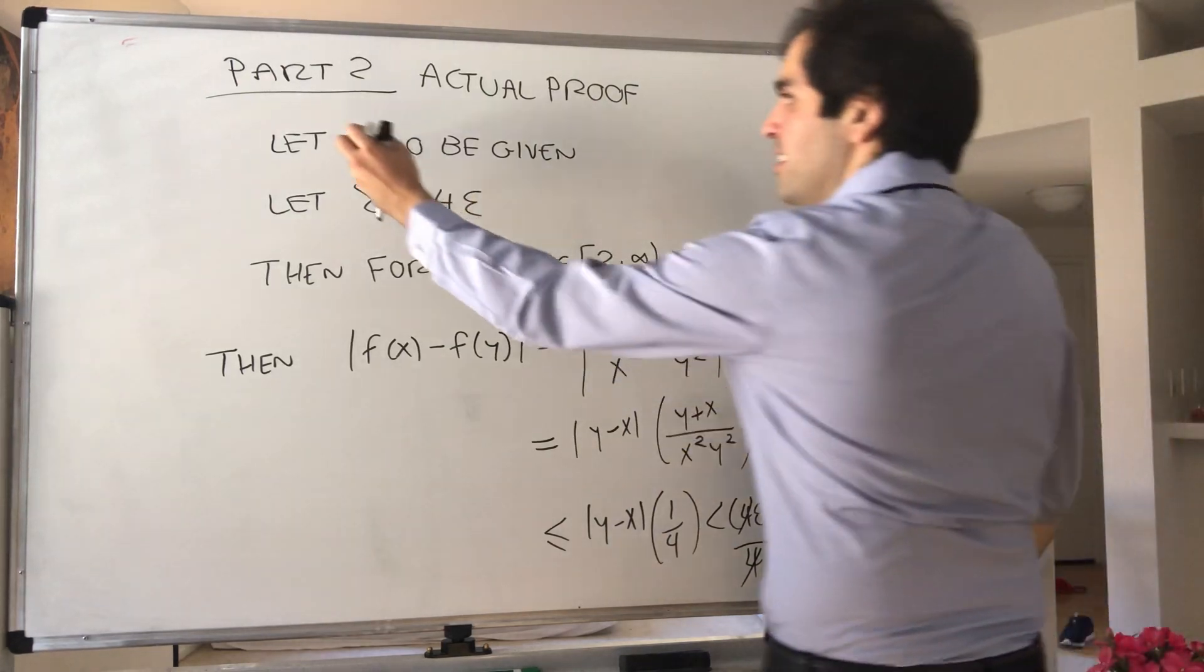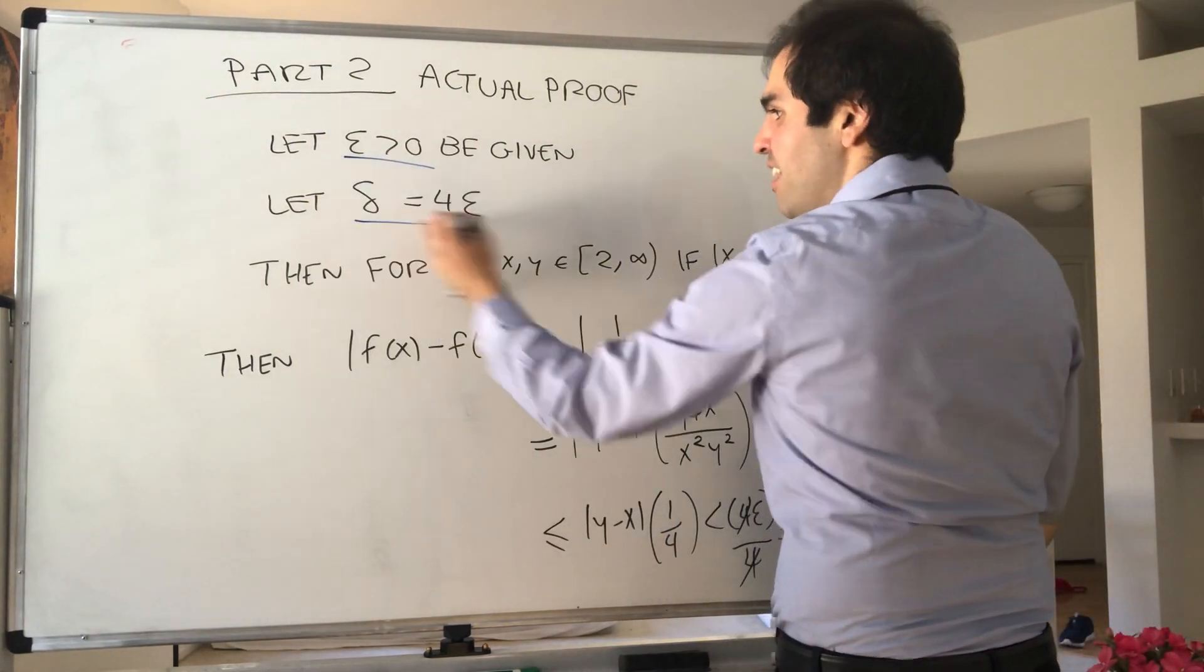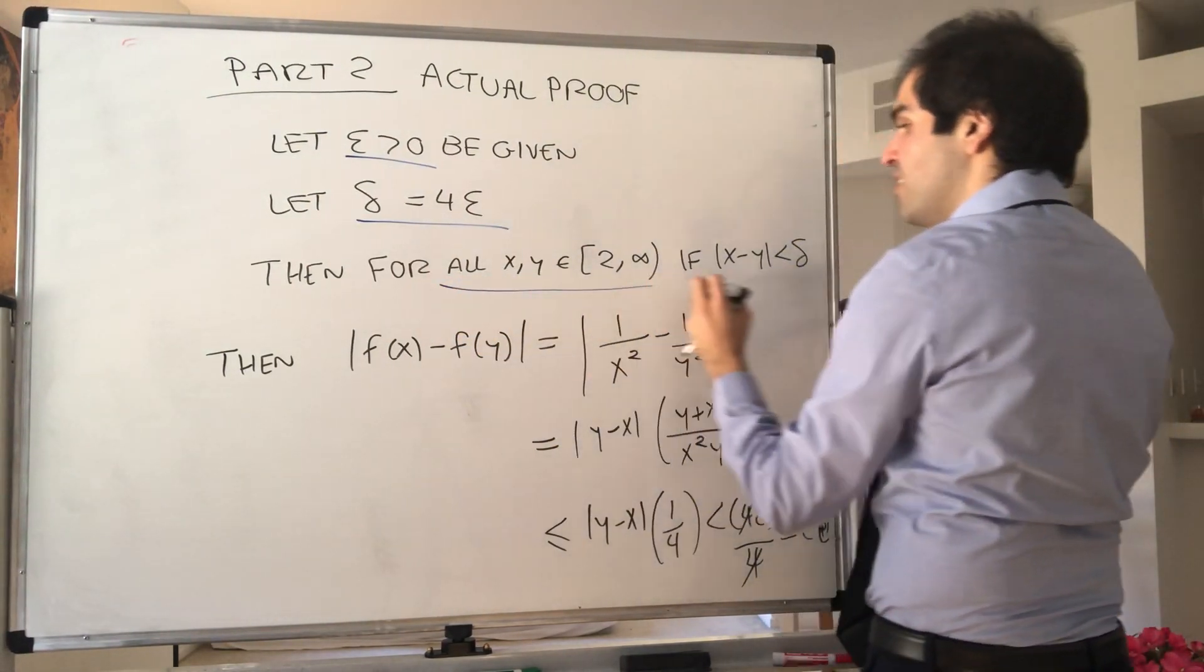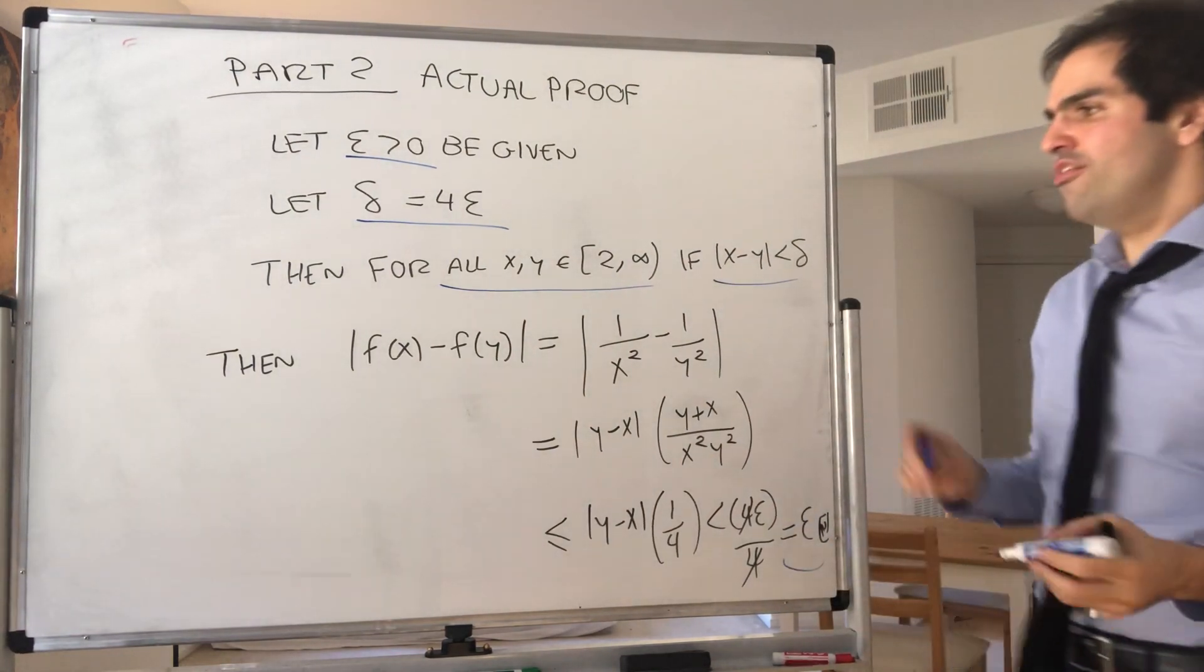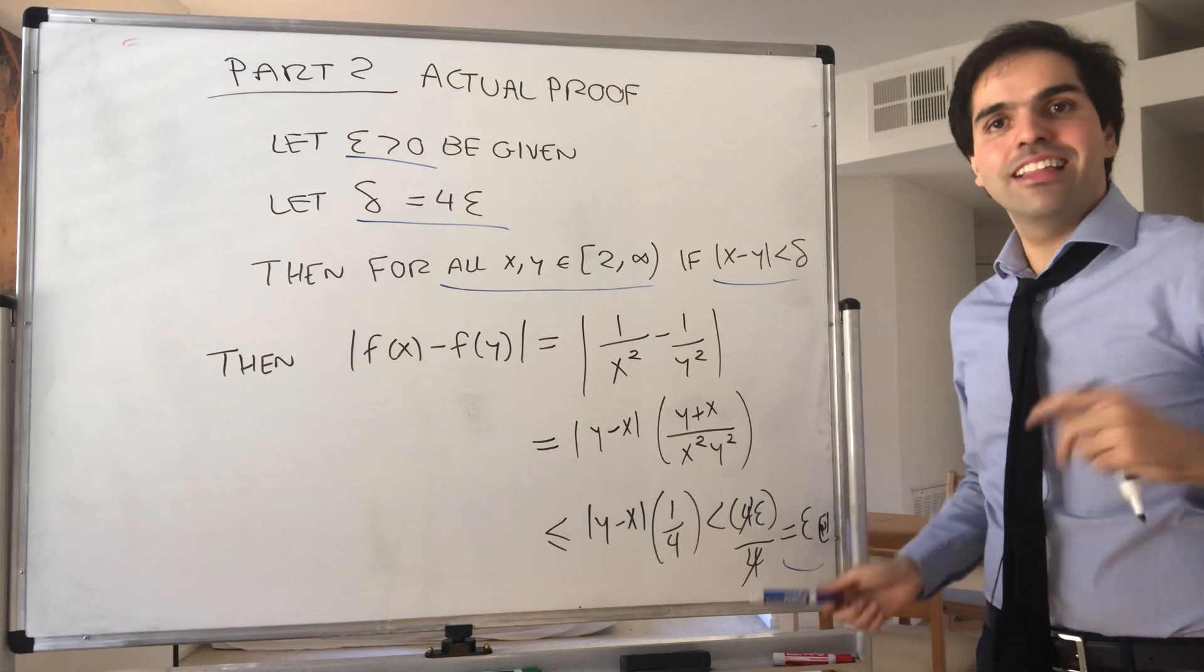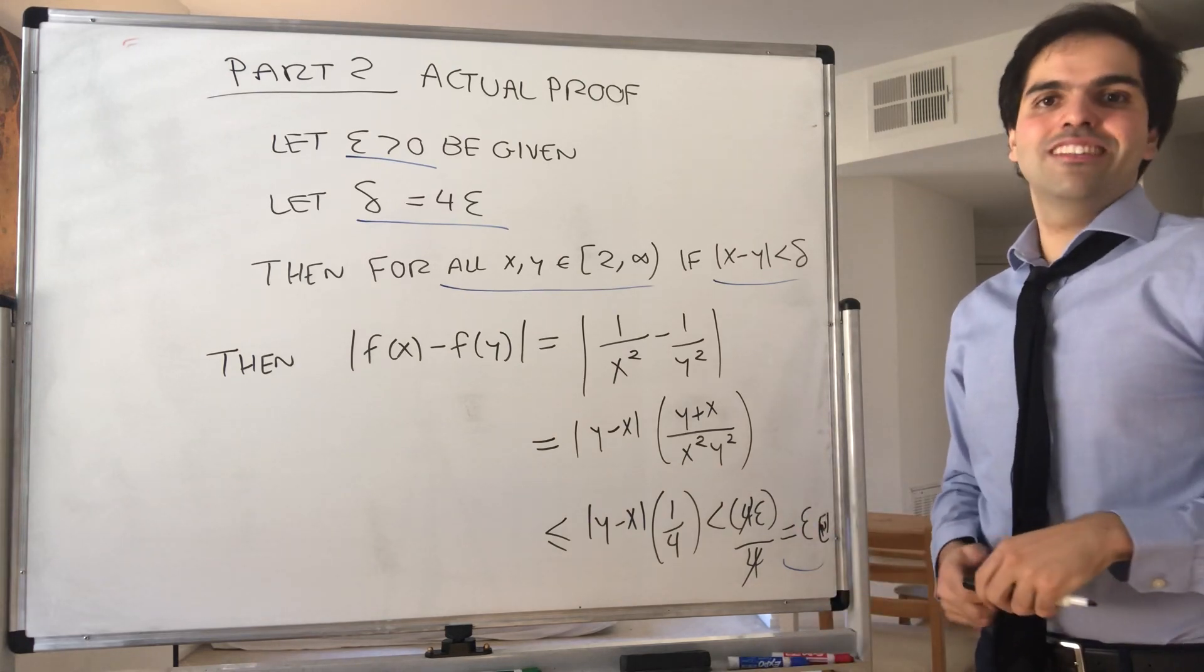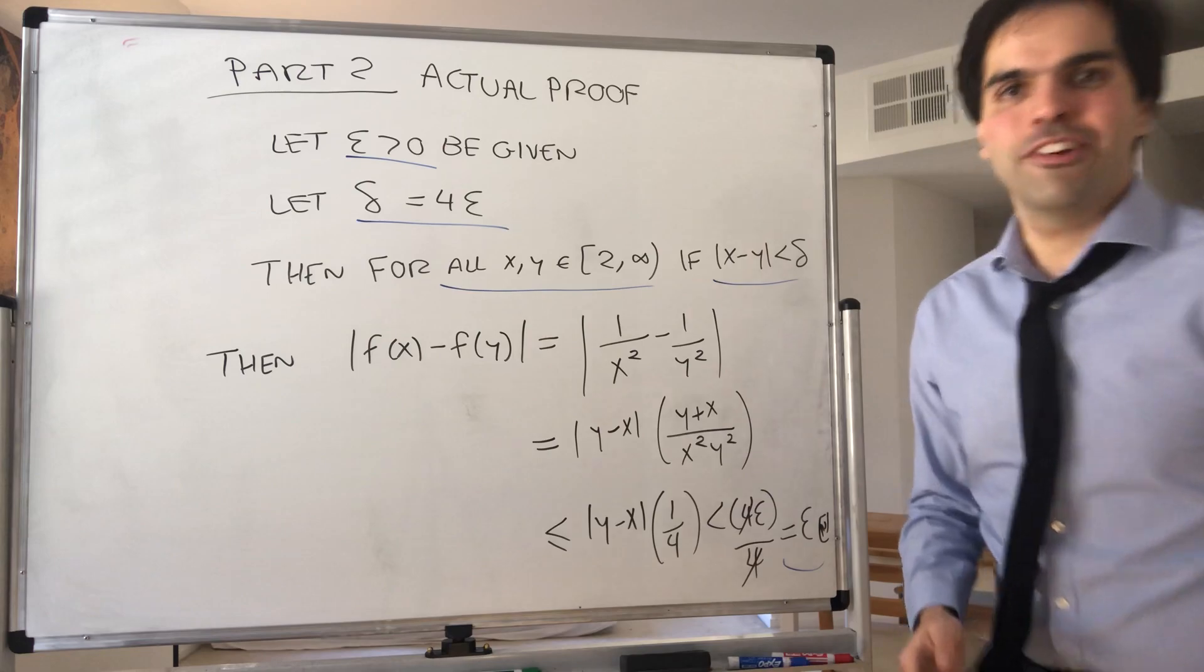Therefore, if epsilon is given, and there is a delta, such that for all x in our interval, if x minus y is less than delta, then f of x minus f of y is less than epsilon. And therefore, we're done. And we can stay home happy. All right, thank you very much.